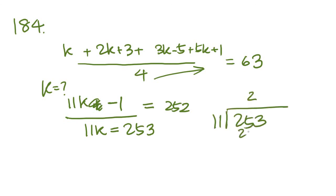So 252. I move the one over, and we get 11K equals 253. Now we just solve for K by dividing. It goes into a 2 times, 33, 3, 23 is going to be our answer, and that is D.